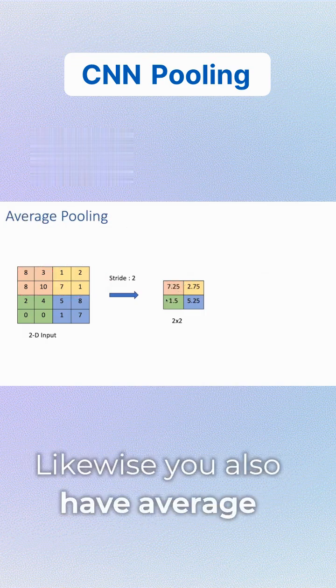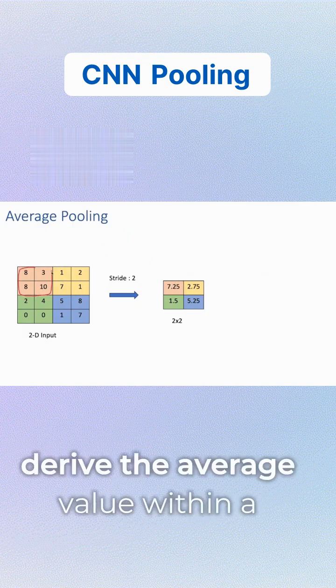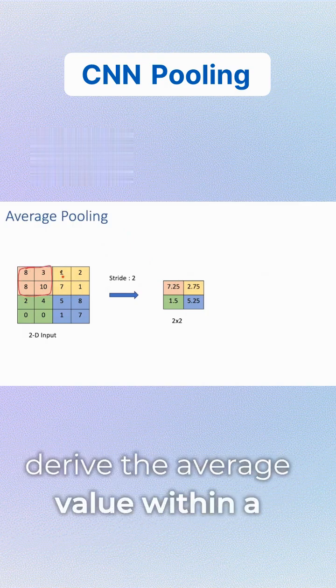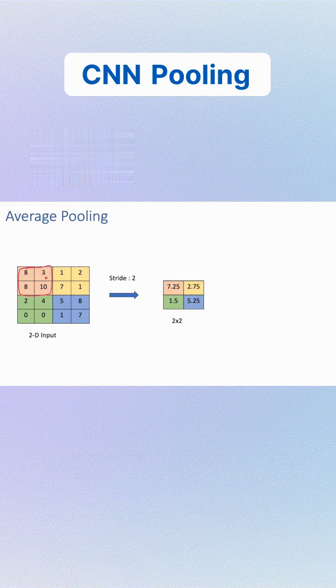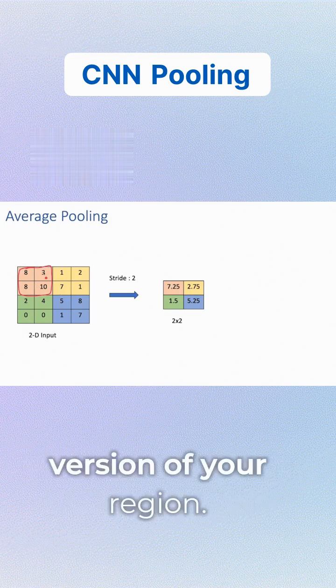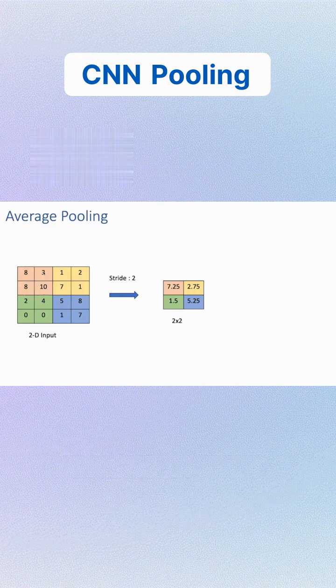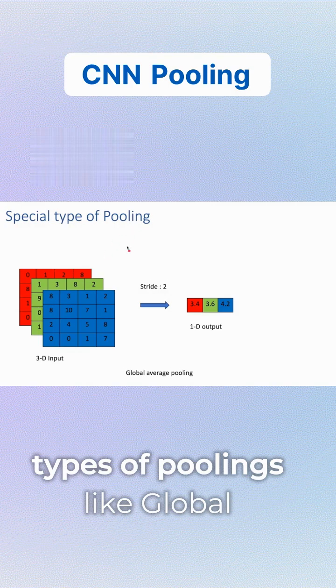Similarly, you also have average pooling where you derive the average value within a localized region, representing the smoothened version of your region. We also have specialized types of pooling like global average pooling.